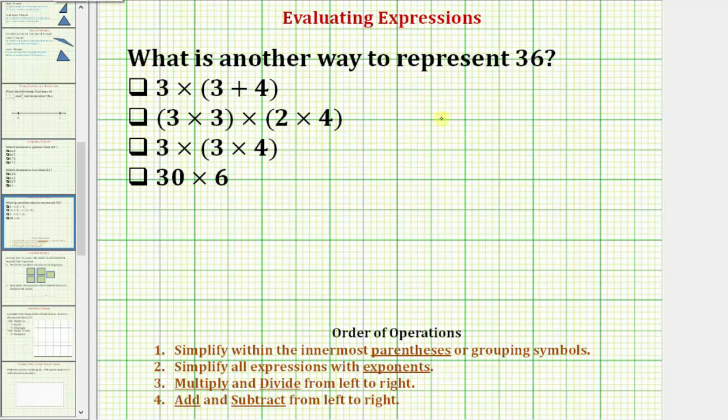For the third expression, we have three times and then in parentheses, three times four. So we first simplify inside the parentheses, so we find this product. Three times four is equal to 12, so this simplifies to three times 12, which does equal 36. So this expression here does have a value of 36.